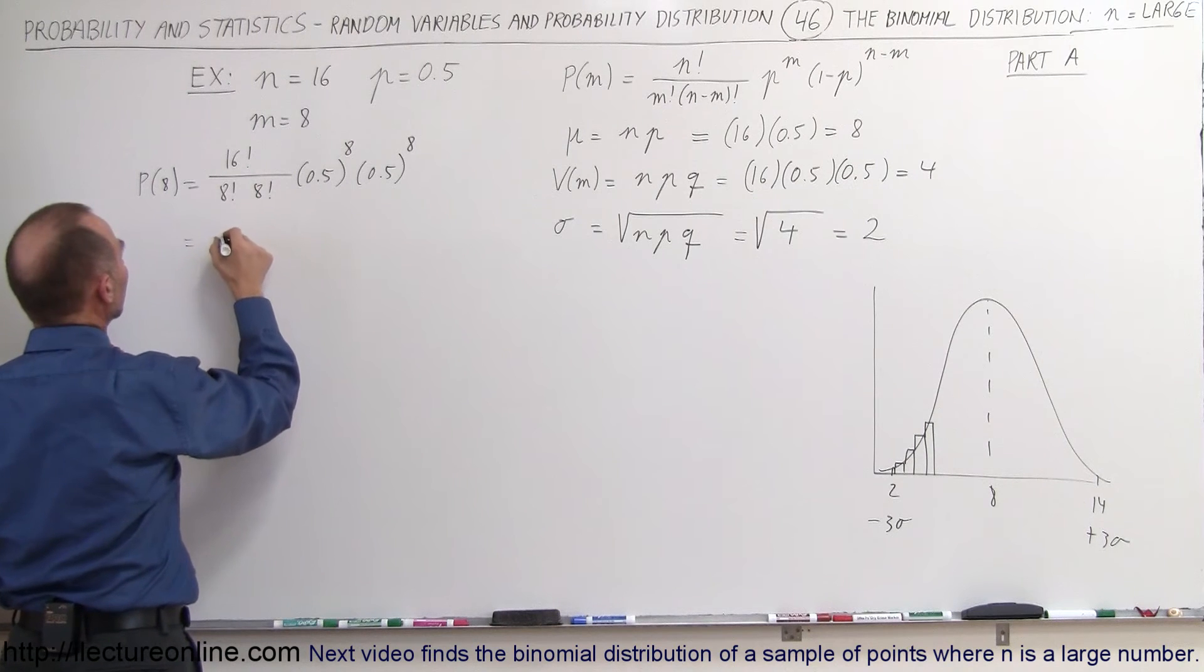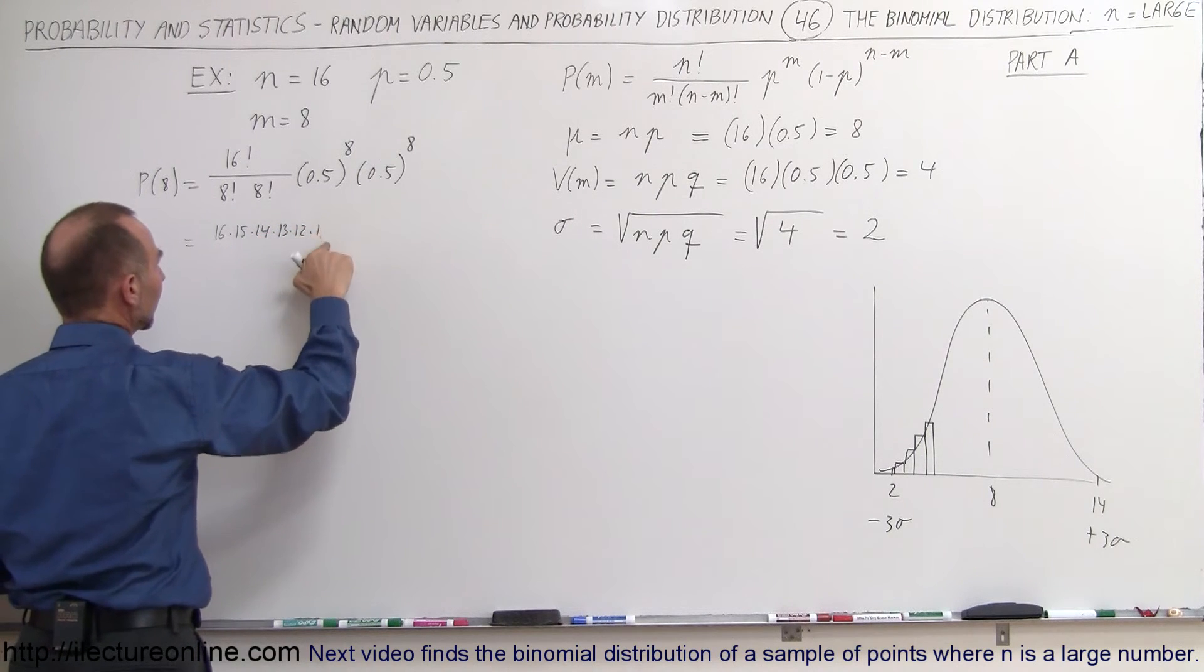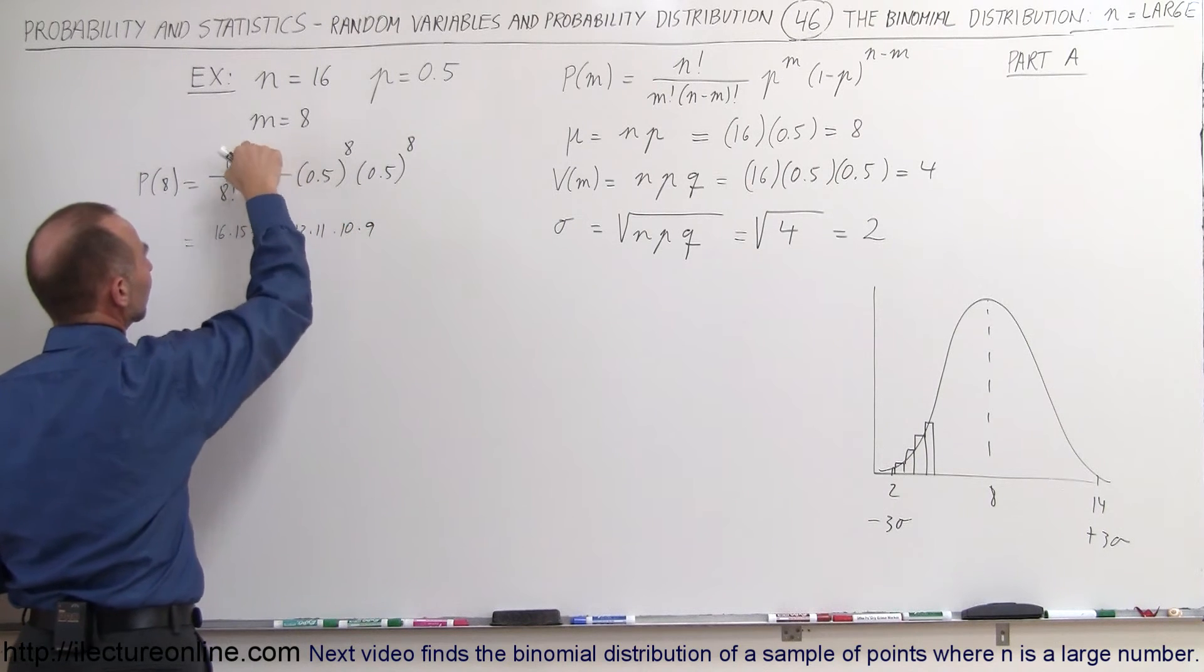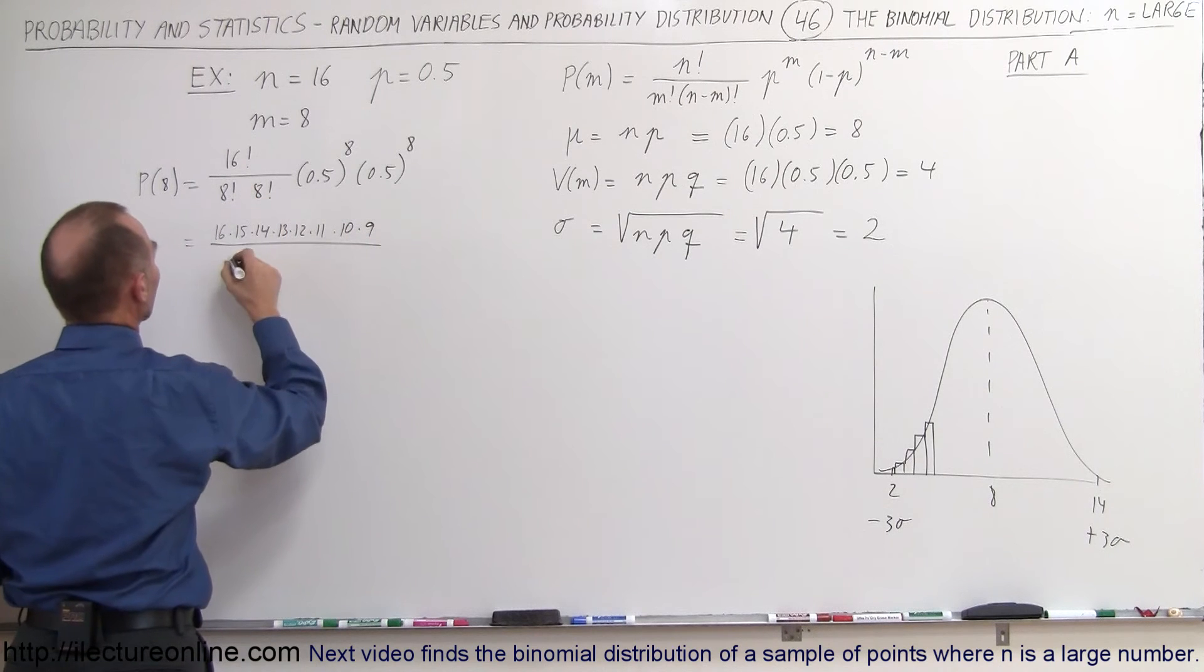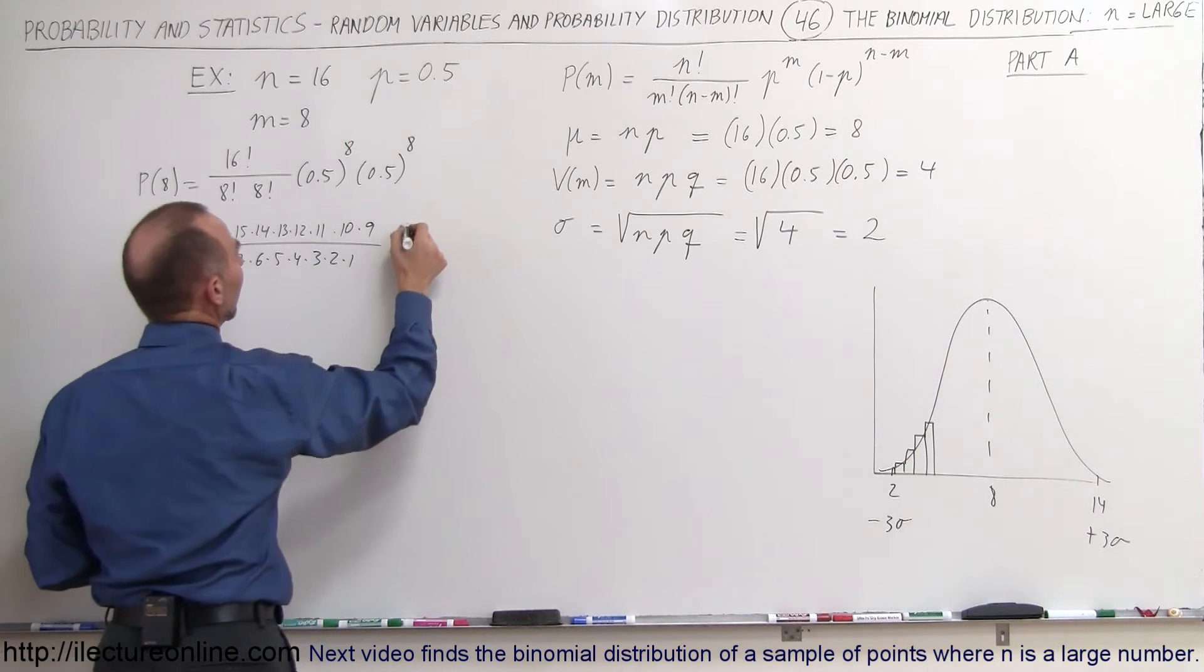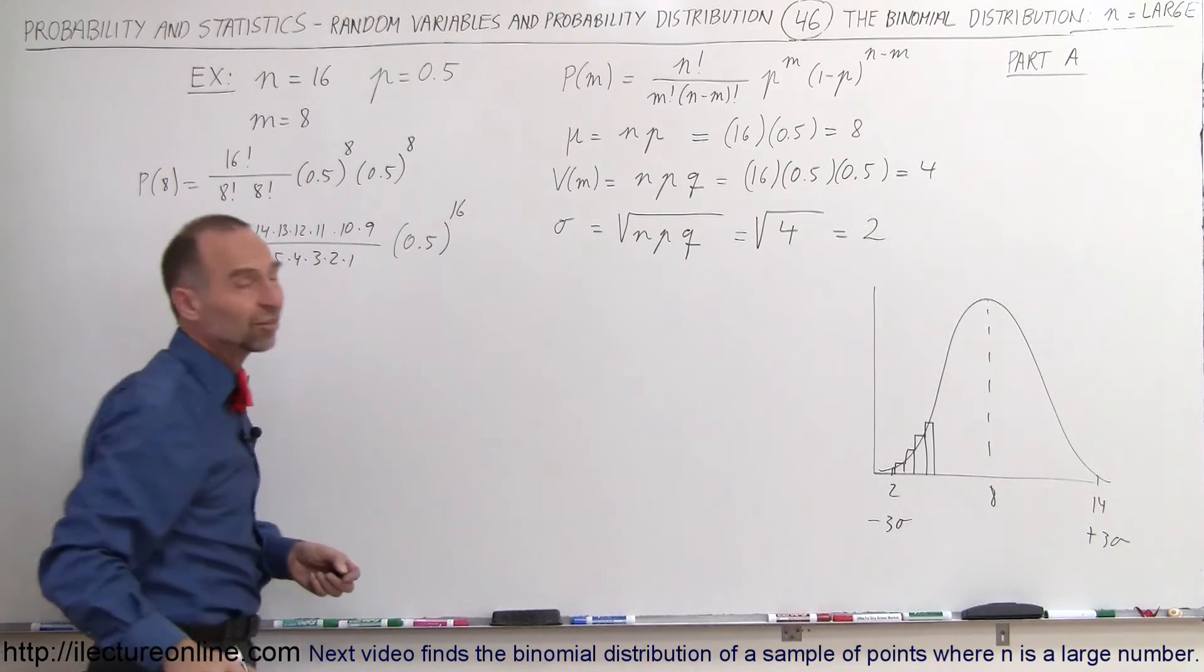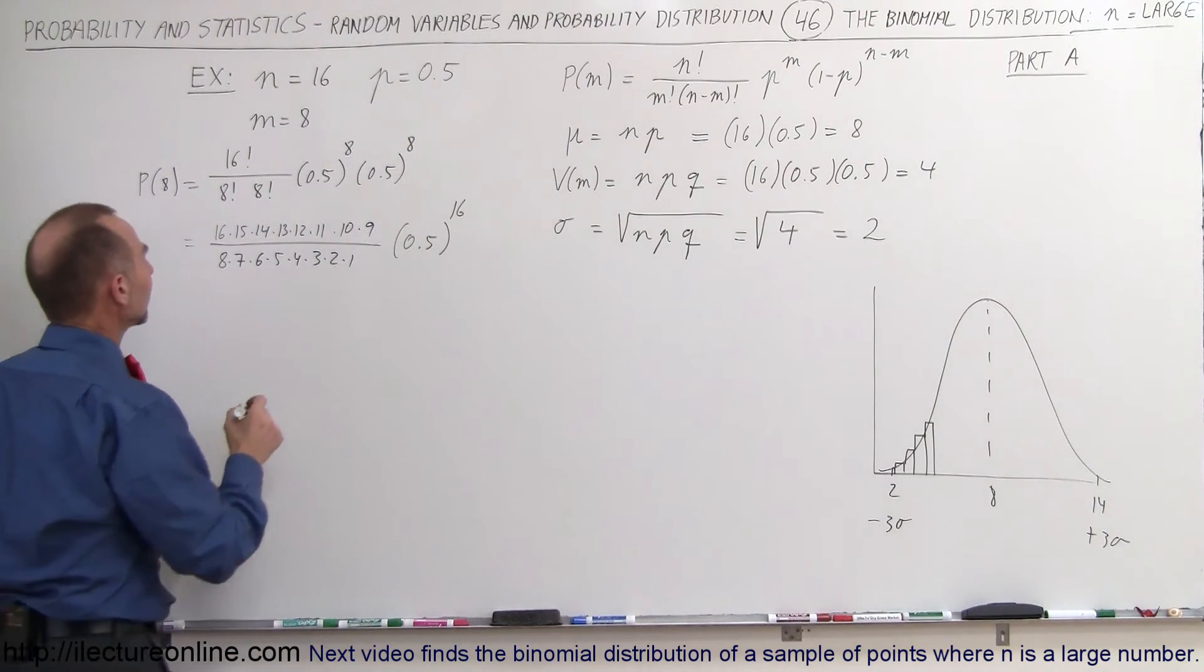This equals 16 times 15 times 14 times 13 times 12 times 11 times 10 times 9, because 16 factorial divided by 8 factorial leaves you with these numbers on top. Then we still have an 8 factorial in the denominator, so 8 times 7 times 6 times 5 times 4 times 3 times 2 times 1, and that would be times 0.5 to the 16th power, because if the bases are the same and multiplying, we simply add exponents.